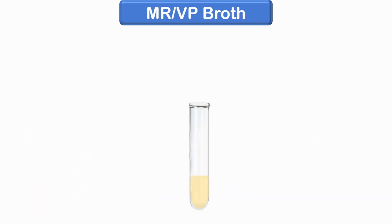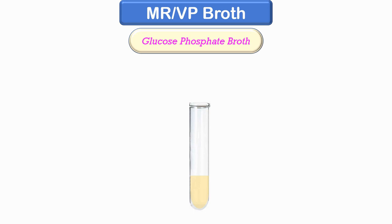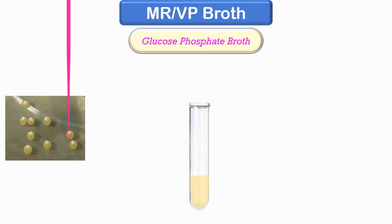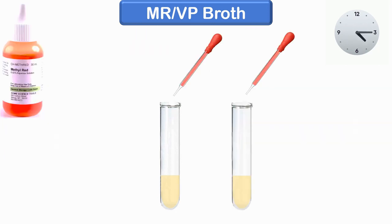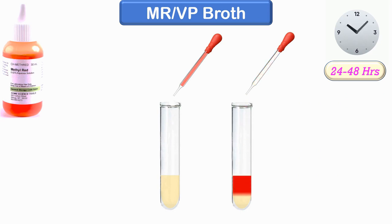The methyl red test is performed in glucose phosphate broth, also called MRVP broth, with a neutral pH of 7.6. The broth is inoculated with a bacterial colony and incubated at 37 degrees Celsius for 24 to 48 hours. After incubation, we add five drops of methyl red indicator. Development of red color indicates a positive methyl red test; yellow color indicates a negative methyl red test. Examples of methyl red positive and negative organisms are shown.